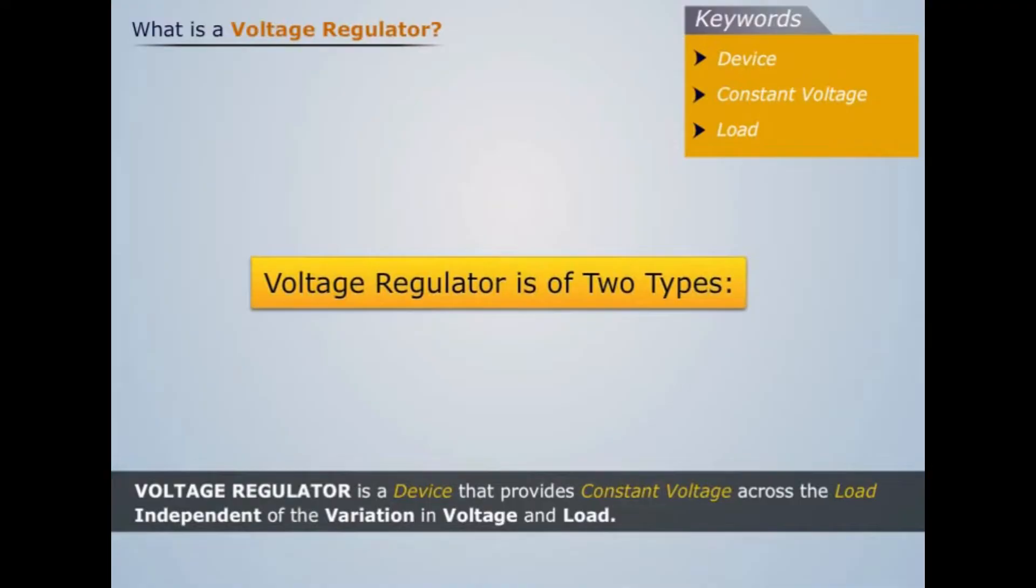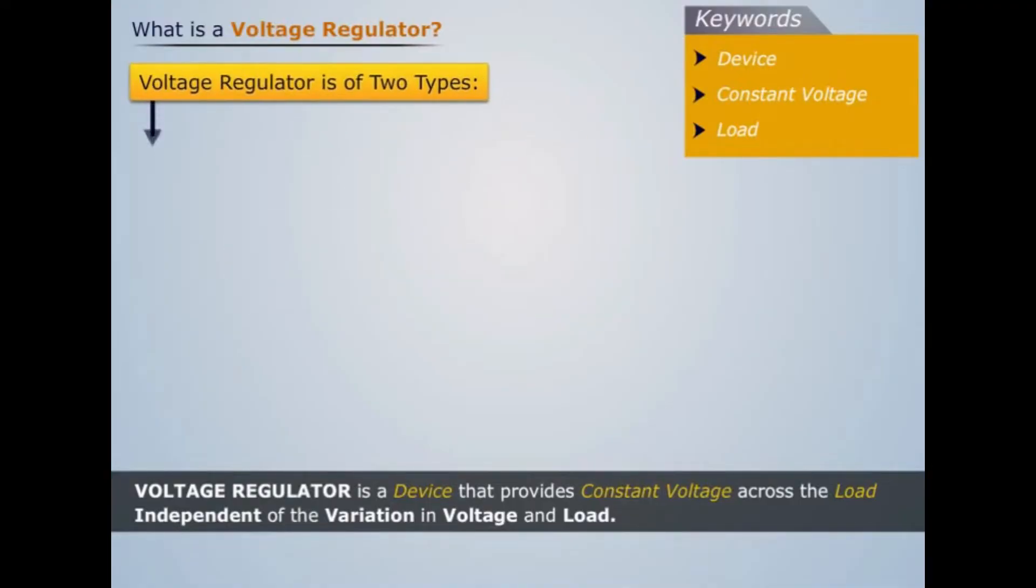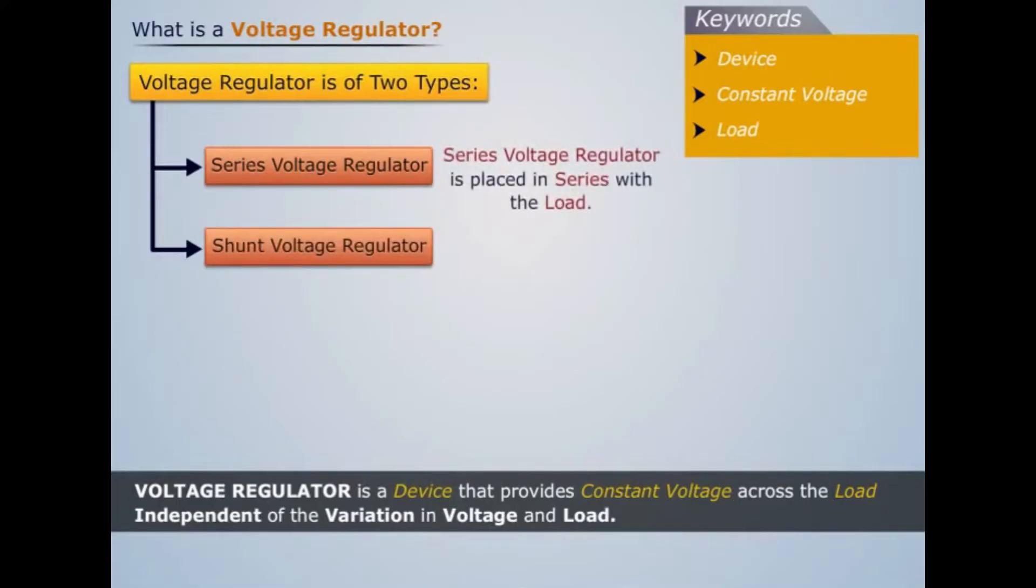Voltage regulators are of two types: series voltage regulator and shunt voltage regulator. Series voltage regulator is placed in series with the load, whereas shunt voltage regulator is placed in parallel with the load.